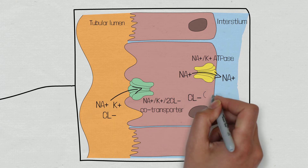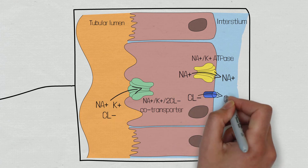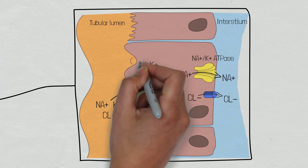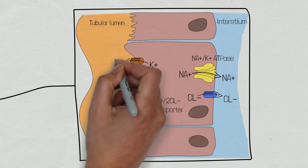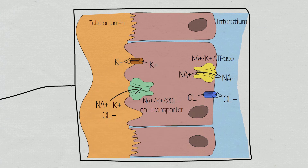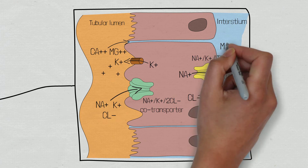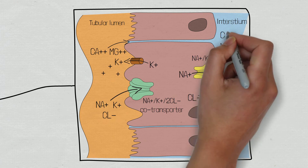Chloride will also move into the interstitial space through chloride transporters. Some of the potassium which is moved into the cell via the sodium-potassium-2-chloride co-transporter and the sodium-potassium pump will leak back out into the tubule, and because potassium is positively charged it will increase the overall charge within the tubule. This causes other positively charged ions such as calcium and magnesium to leave the tubular lumen and move into the interstitial space of the kidney medulla.